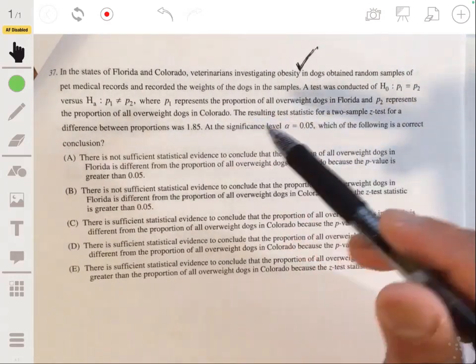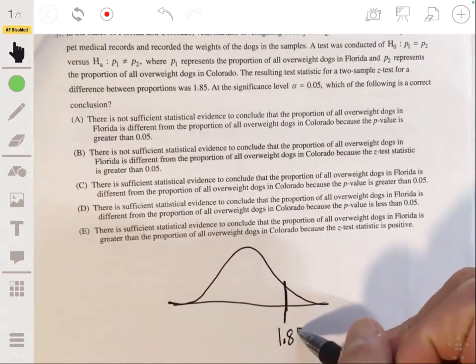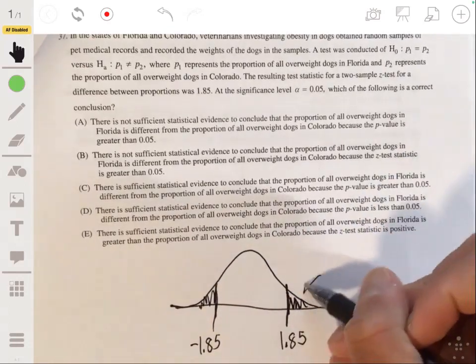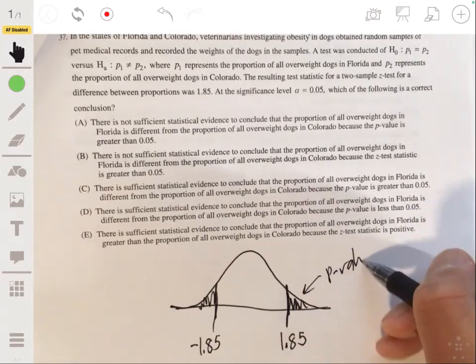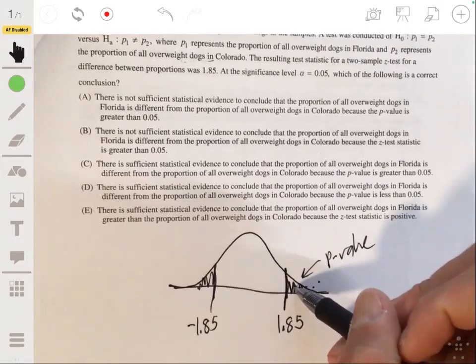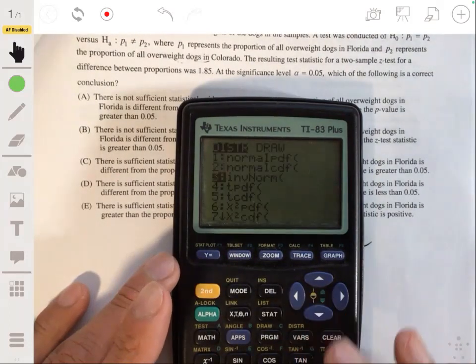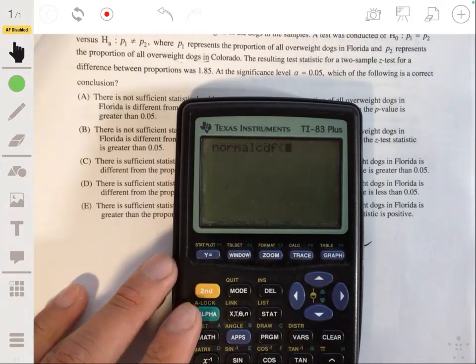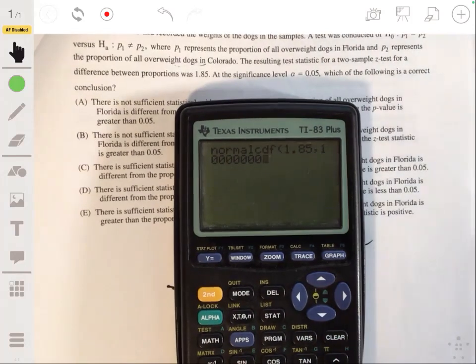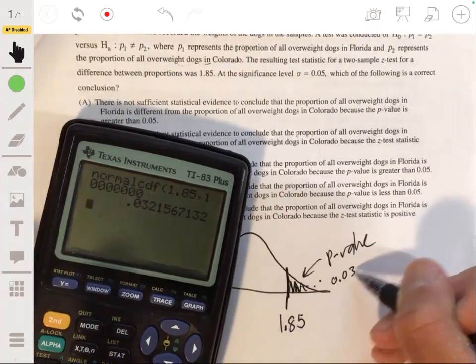So we want to see what would happen here. Essentially, we wanted to find what the area would be to the right of 1.85 and to the left of negative 1.85, or two times this, because we have a two-sided test. We have to consider both directions. So find the P-value or the probability here. For that, we can use our calculator. Distribution, normal CDF, 1.85 lower bound, upper bound, billion. This is a Z-score, so we don't have to enter anything else, and we get a value of 0.032.